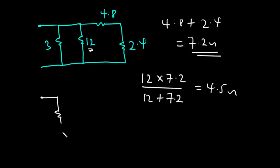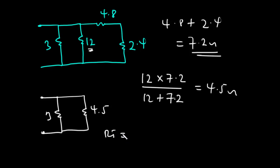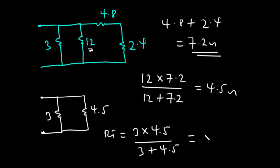Finally, the circuit has the 3-ohm resistor in parallel with the 4.5-ohm resistor. So the total resistance is 3 times 4.5 divided by (3 plus 4.5), which gives 1.8 ohms. The total resistance for this circuit is equal to 1.8 ohms. That's it for this video — if you like the content, feel free to like, comment, and share. Don't forget to subscribe to receive more interesting videos.